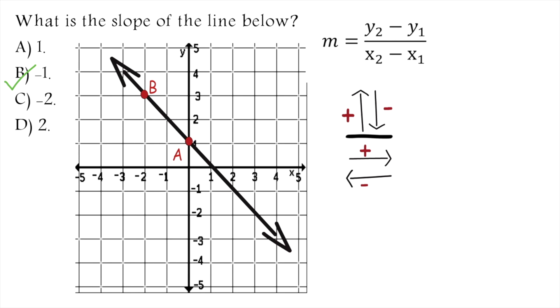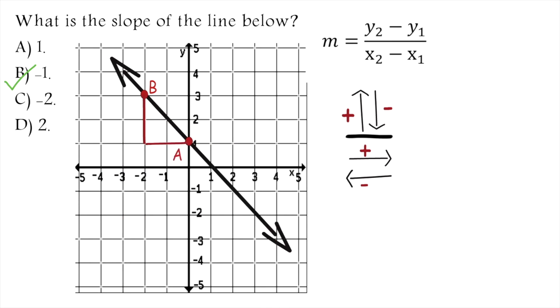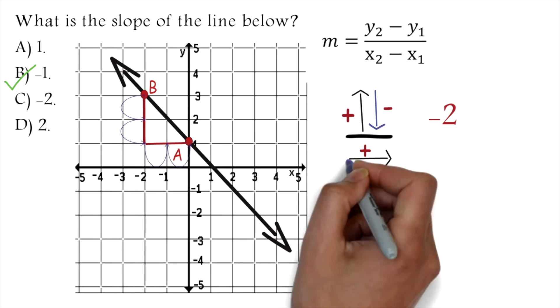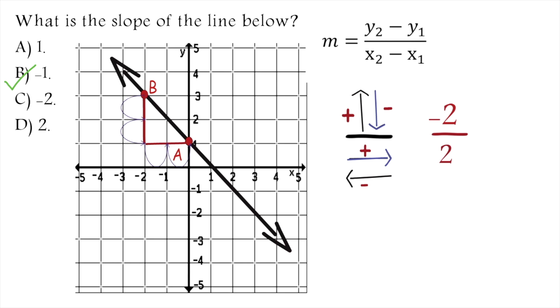However, it is important to choose points that will make your work easier. Choose points whose x and y values can be easily determined. Normally, points at the corners are best. Now to find the slope, all we are doing is moving from one point of the line to the other on the slope triangle. Let's move from b to a. We moved down 2 points. Notice moving down is negative. So we have -2 here. Then we will move to the right 2 points to get to a. Notice that moving to the right is positive. We have 2 here. -2 over positive 2 is -1.